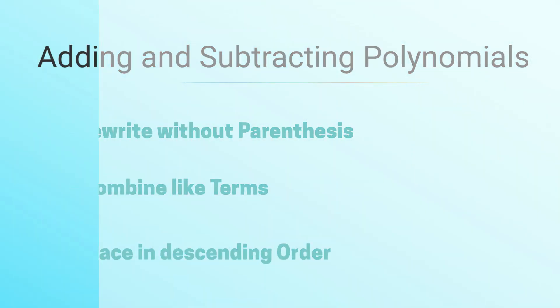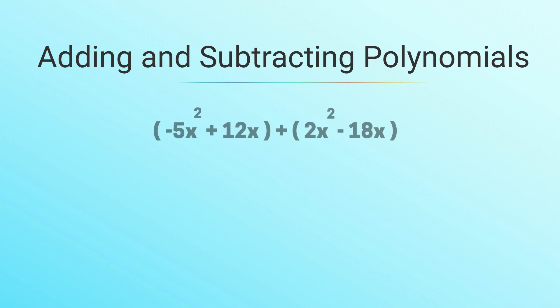So let's get started with this first example. We have negative 5x² plus 12x plus 2x² minus 18x. In order to drop the parentheses, we're going to have to distribute the positive sign.